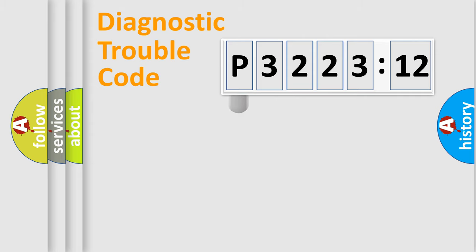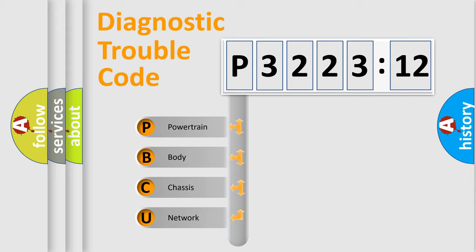Powertrain, body, chassis, and network. This distribution is defined in the first character code.